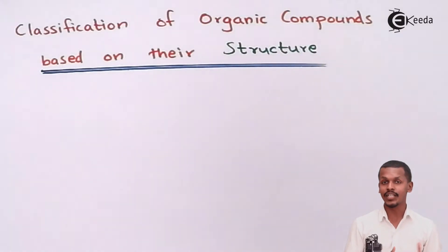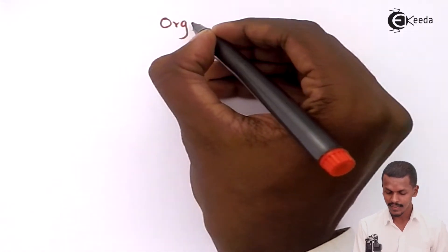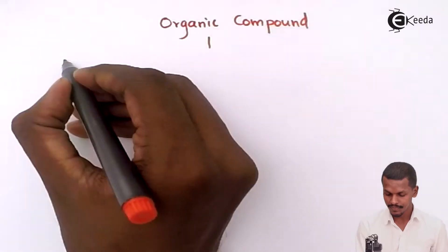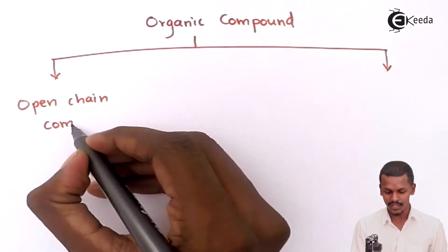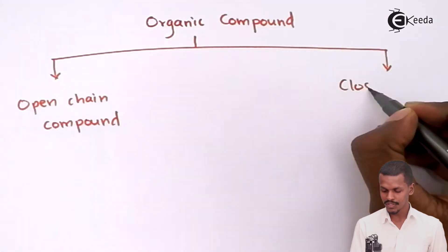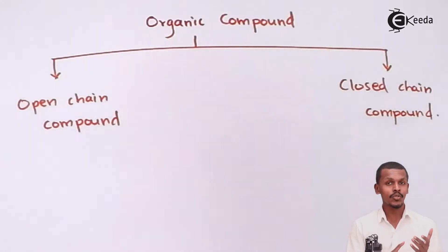The classification of organic compounds starts with the fact that organic compounds are basically divided into two parts: open chain organic compounds and closed chain organic compounds. Let me give you a glimpse by drawing a tree diagram. Organic compounds are of two types: open chain compounds and closed chain compounds. Open chain compounds are also known as aliphatic organic compounds, while closed chain organic compounds are known as cyclic chain compounds.